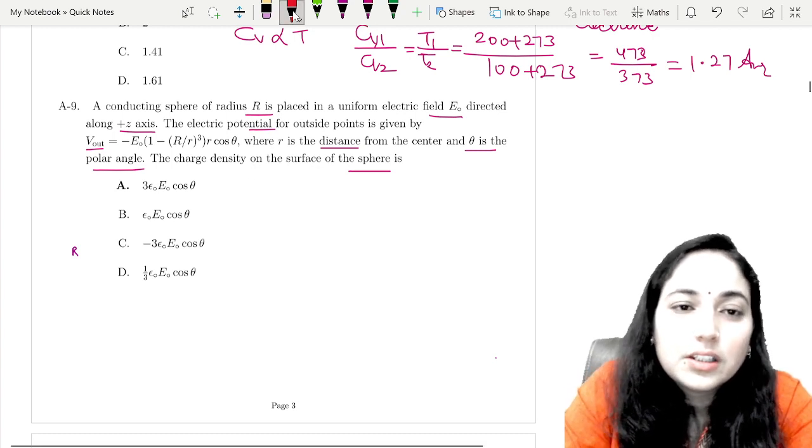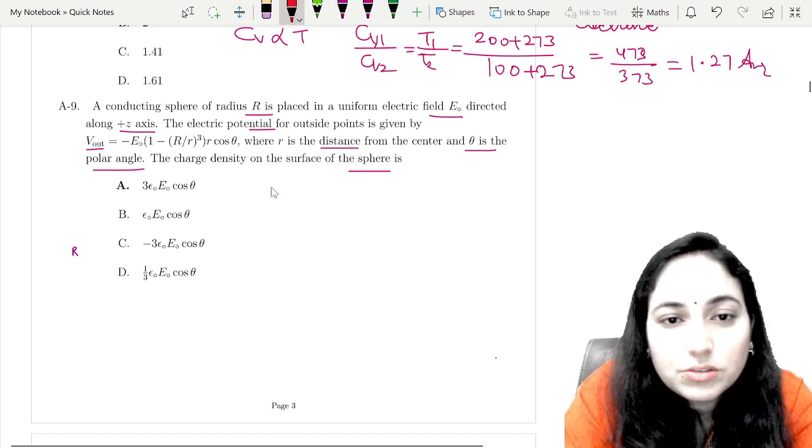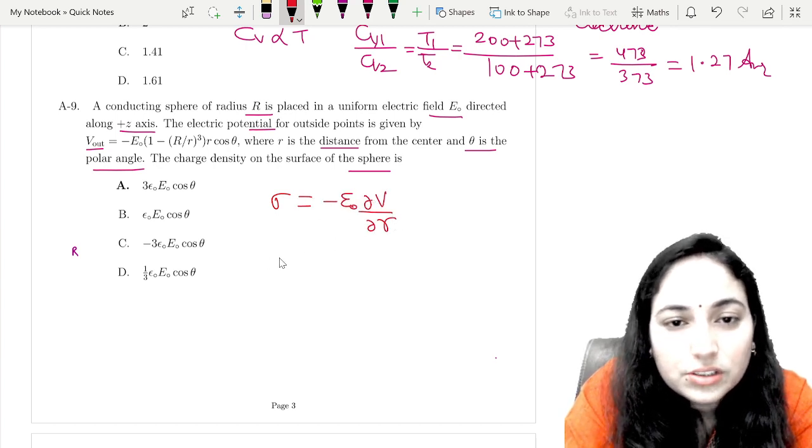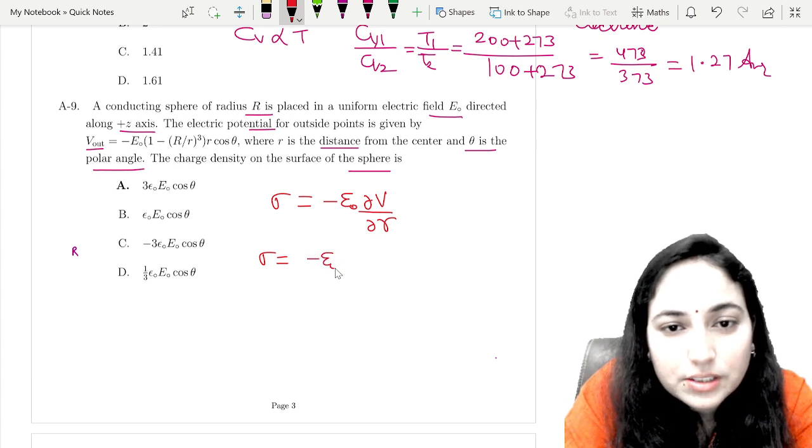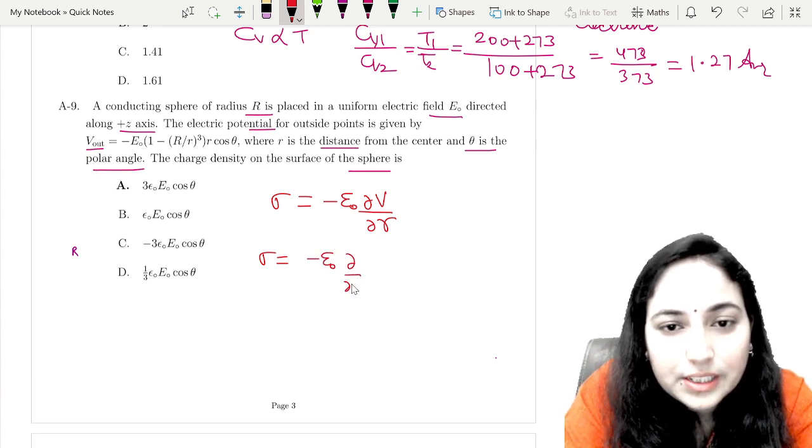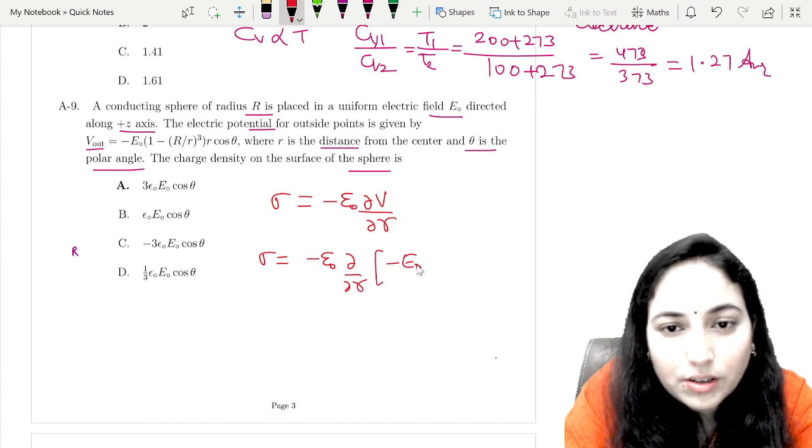Since we're talking about outside the sphere, sigma equals minus epsilon₀ del V by del r. Substituting values: minus epsilon₀ times del by del r of minus E₀ cos theta.